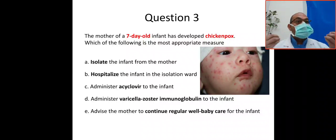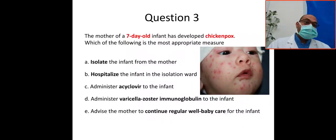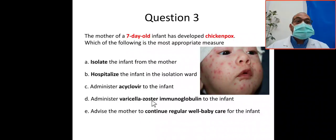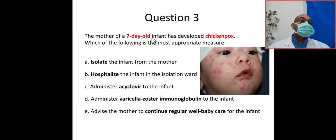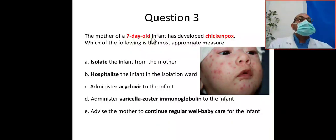What is the indication for varicella zoster immunoglobulin? If the mother is infected five days before or two days after delivery. But in this case, the infant is seven days old — that is beyond two days after delivery. So there is no indication for varicella zoster immunoglobulin, and also no indication for isolation, whether home isolation or hospitalization.